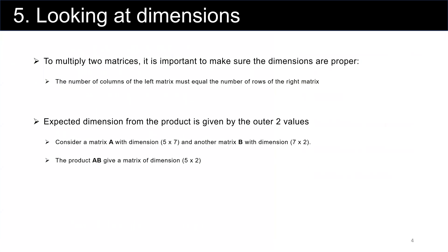To be able to multiply two matrices, it is very important to make sure that the dimensions are proper. If you have matrix A which is n by m, you can multiply by matrix B which is n by p. The number of columns in A must equal the number of rows in B, and the result is matrix C which is m by p.